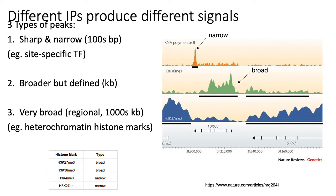On the other hand, certain types of marks like K36 trimethylation tend to be broader than narrow peaks. As you can see in this diagram, compared to transcription factors, the peaks are much wider and have some oscillation and periodicity. At the other end of the spectrum, heterochromatin marks can be very wide — on the order of kilobases long. So peaks for K27 trimethylation, for example, would be much wider than K36 trimethylation.